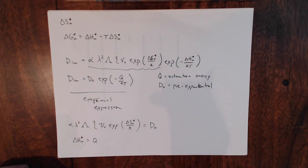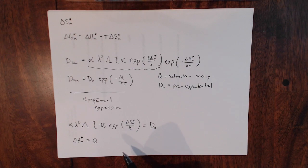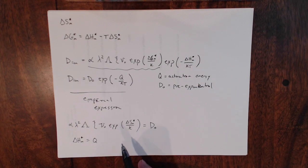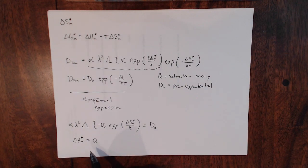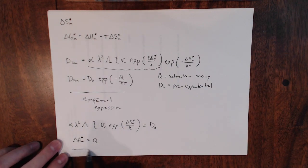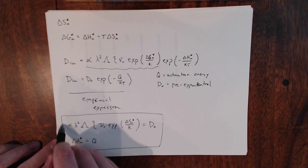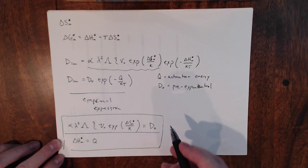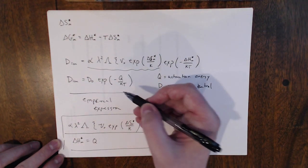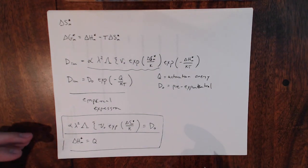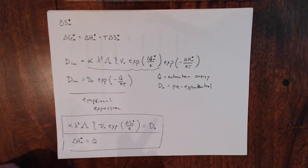We have derived this expression — there are limitations to it, but this is putting meaning behind the terms in the empirical expression. We have assigned values to D_naught and Q. Next, we are going to look at the temperature dependence of diffusivity.